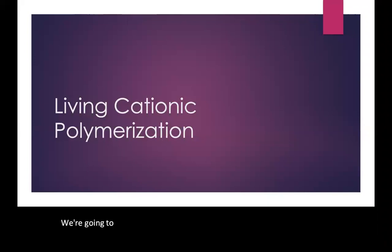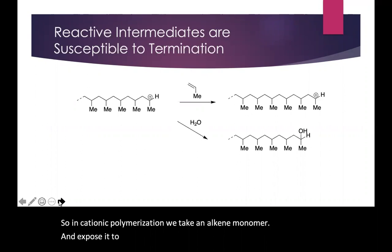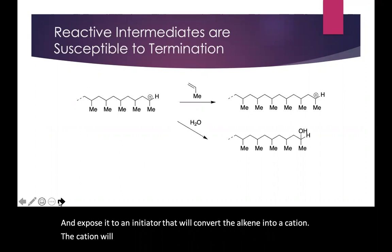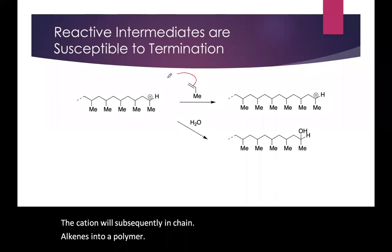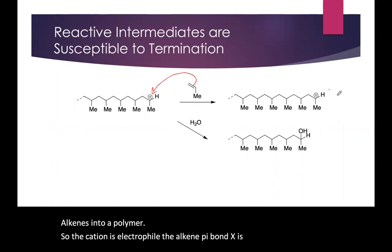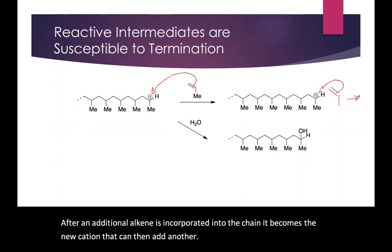We're going to take a look at living cationic polymerization. In cationic polymerization, we take an alkene monomer and expose it to an initiator that will convert the alkene into a cation. That cation will subsequently chain alkenes into a polymer. The cation is an electrophile, the alkene pi bond acts as a nucleophile, and after an additional alkene is incorporated into the chain, it becomes the new cation that can then add another monomer, and so on.